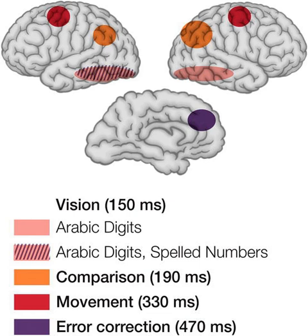Choice reaction time tasks require distinct responses for each possible class of stimulus. For example, the subject might be asked to press one button if a red light appears and a different button if a yellow light appears. The Jensen box is an example of an instrument designed to measure choice reaction time. Discrimination reaction time involves comparing pairs of simultaneously presented visual displays and then pressing one of two buttons according to which display appears brighter, longer, heavier, or greater in magnitude on some dimension of interest.